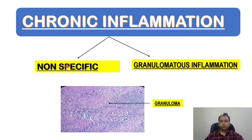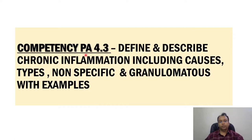In granulomatous inflammation there will be granuloma formation. The granuloma is a type 4 hypersensitivity, and we will discuss it in detail in subsequent slides. This particular chronic inflammation topic comes under competency number PA 4.3 as per the Indian curriculum, meaning students need to understand, define, and describe chronic inflammation including its causes, types, non-specific and granulomatous inflammation with examples.